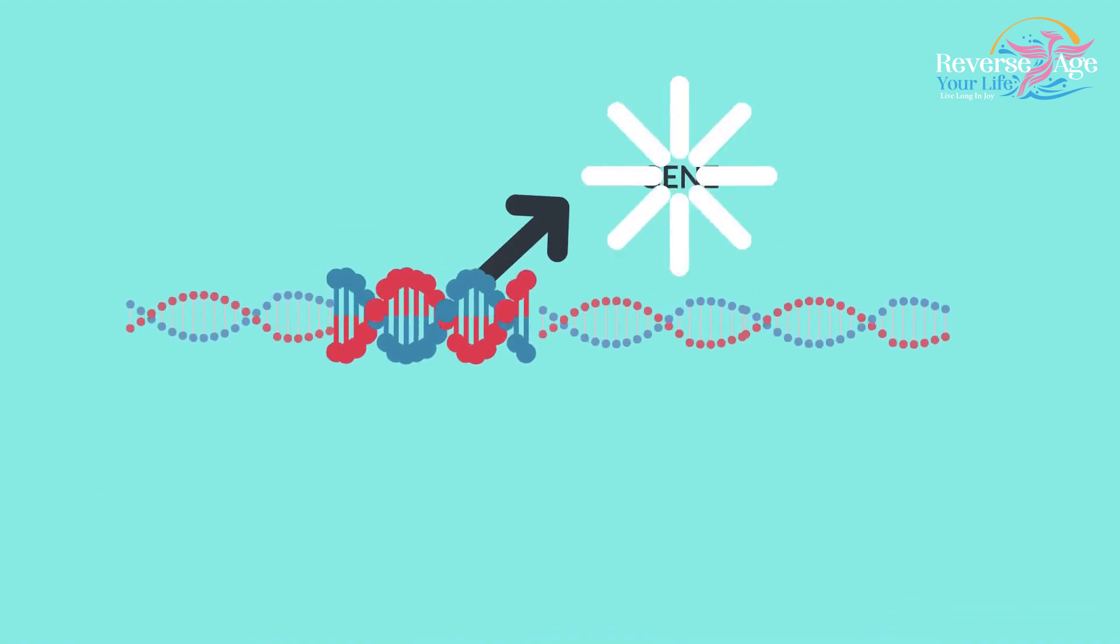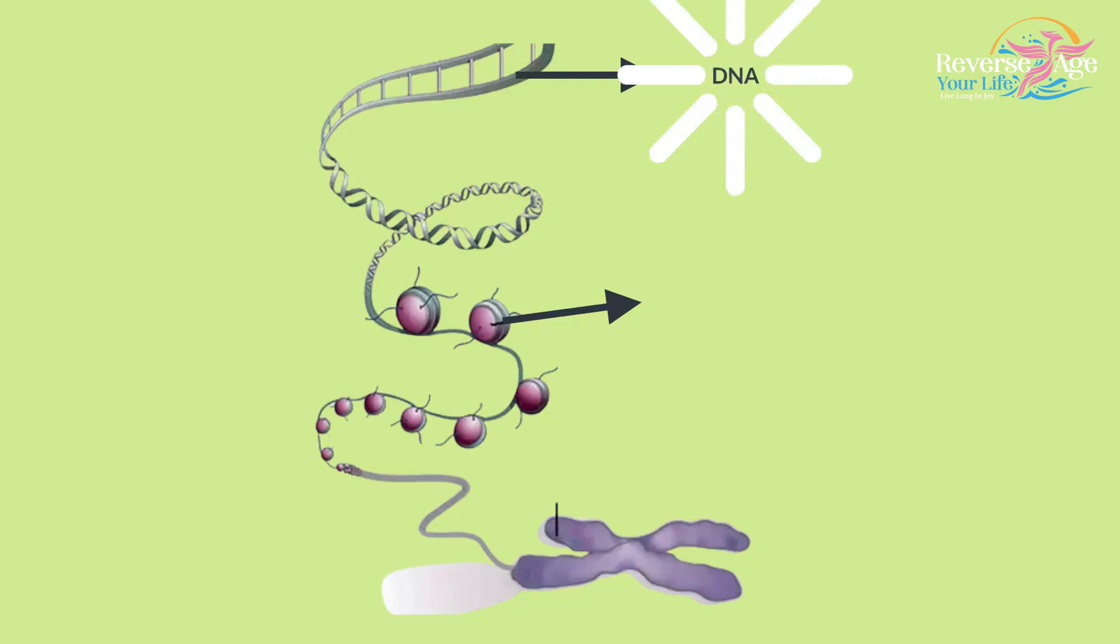This readable portion is called a gene. These DNA strands containing genes are so neatly packed that these packagings are the structures we call chromosomes.